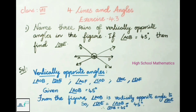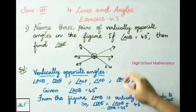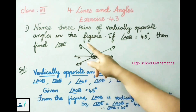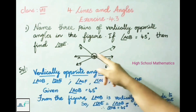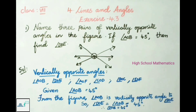All these 3 are vertically opposite angles. Given angle AOB is equal to 45 degrees, and from the figure angle AOB and angle DOE are vertically opposite angles, so angle DOE is equal to angle AOB, which equals 45 degrees. Therefore, angle DOE is equal to 45 degrees.